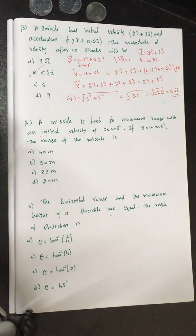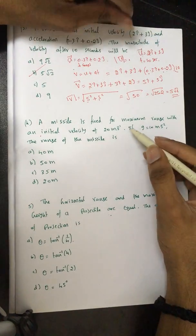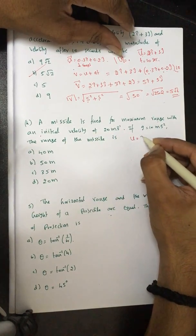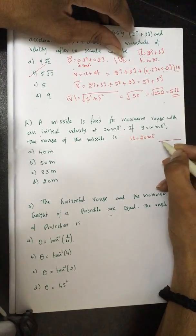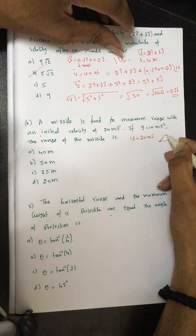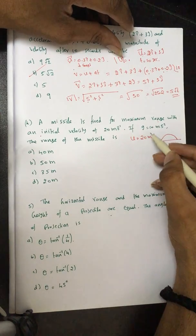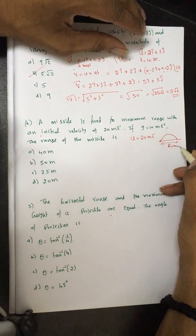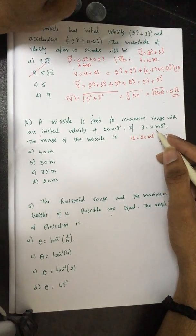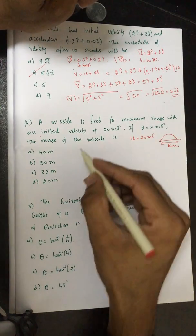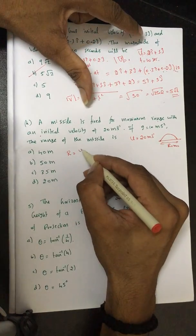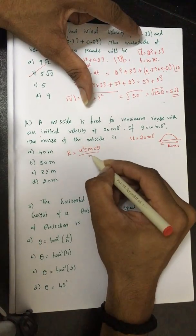We have one more problem on projectile motion. A missile is fired for maximum range with an initial velocity of 20 m/s. The missile follows a parabolic path and is fired such that the range is maximum. g is taken as 10 m/s². They ask what is the actual range. The condition is maximum range, so let me write the equation for range: R = u² sin 2θ / g.